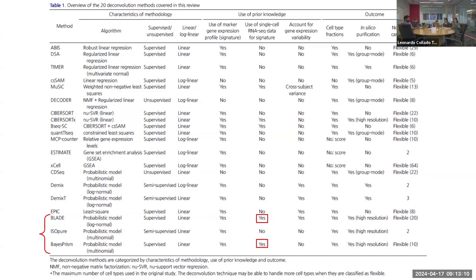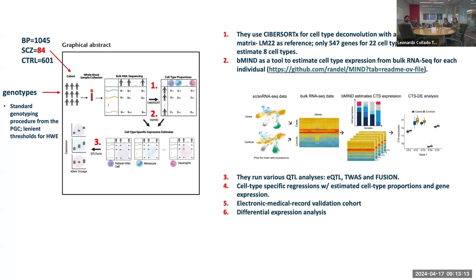These types of methods I see as very useful. Moving to the next slide — this is basically from the paper and related to this type of method — they use BIMIND as a tool to estimate cell-type expression from bulk RNA-seq for each individual.